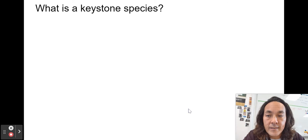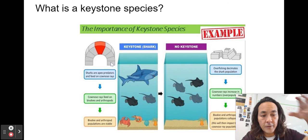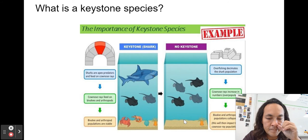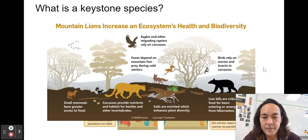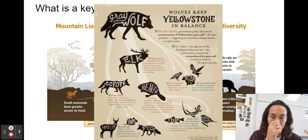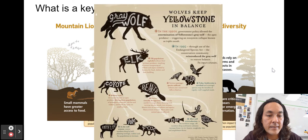Sea otters are a keystone species. A keystone species is one whose removal would cause the ecosystem to come crumbling down — like removing the keystone from an arch. Sharks are often keystone species; remove them and rays go unchecked, depleting smaller populations. Other examples include mountain lions and wolves in Yellowstone. Keystone species are not always apex predators — wildebeest in the Serengeti and even the rinderpest virus are examples of non-predator keystone influences.